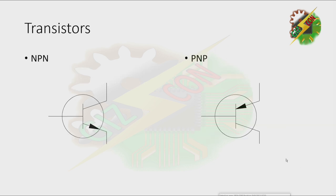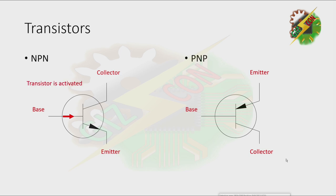Before we discuss transistor output, let's have a quick review about transistors. We have the NPN transistor and the PNP transistor. For both NPN and PNP transistors, we have three terminals: emitter, base, and collector. For an NPN transistor, when the transistor is activated, the current is allowed to flow from collector to emitter.